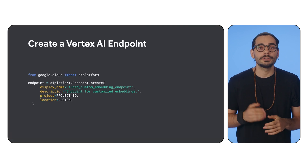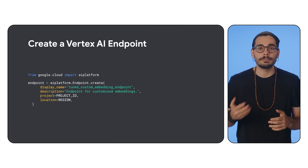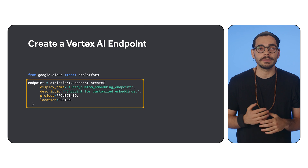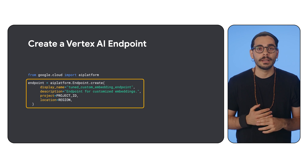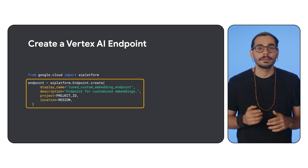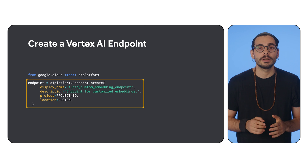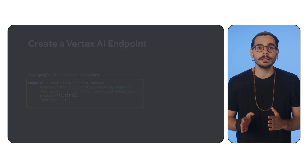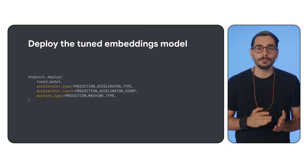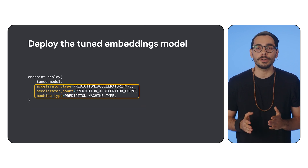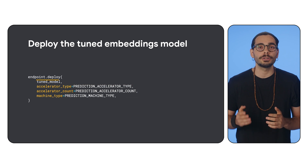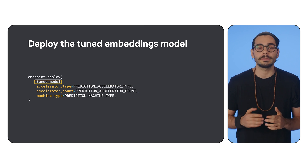Finally, you deploy your tuned embeddings model to a Vertex AI endpoint for online serving. The Vertex AI SDK makes this effortless — you create an endpoint for the model, specify the model and the desired hardware configuration, and deploy your tuned embeddings model.